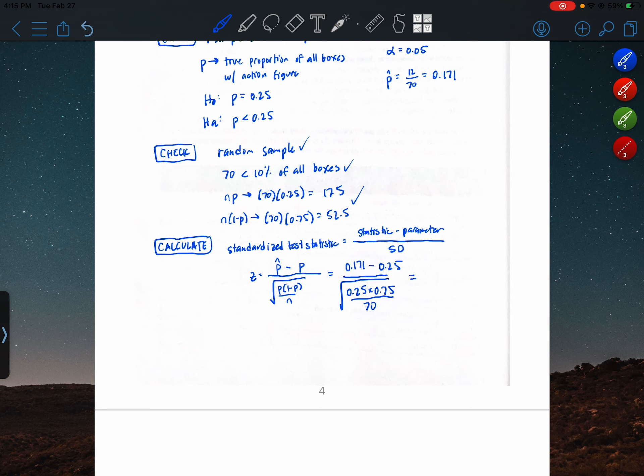I'm going to calculate this off screen. So 0.171 minus 0.25 divided by square root 0.25 times 0.75 over 70. So we get a standardized test statistic, a z-score of negative 1.53.